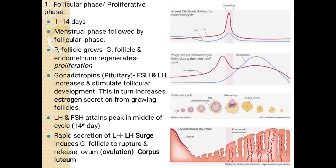The follicular phase is also called the proliferative phase and lasts from day 1 to day 14. After the menstrual phase comes the follicular phase — in this phase, primary follicles convert and grow into Graafian follicles, and the endometrium undergoes proliferation. FSH and LH work here, helping in secreting estrogen. LH and FSH attain their peak in the middle on the 14th day — rapid secretion of LH causes the Graafian follicle to rupture and the egg is released. When the egg is released, the corpus luteum becomes empty.